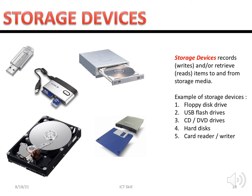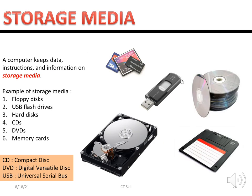A storage device records and retrieves items to and from storage media. Examples include floppy disk drive, USB flash drive, CD, hard disk, and card reader. We commonly use a hard disk to store data and information — there are two types: external and built-in. An external hard disk is mobile and you can bring it everywhere, while a built-in one stays inside the laptop or computer. Another common example is a flash drive or pen drive.